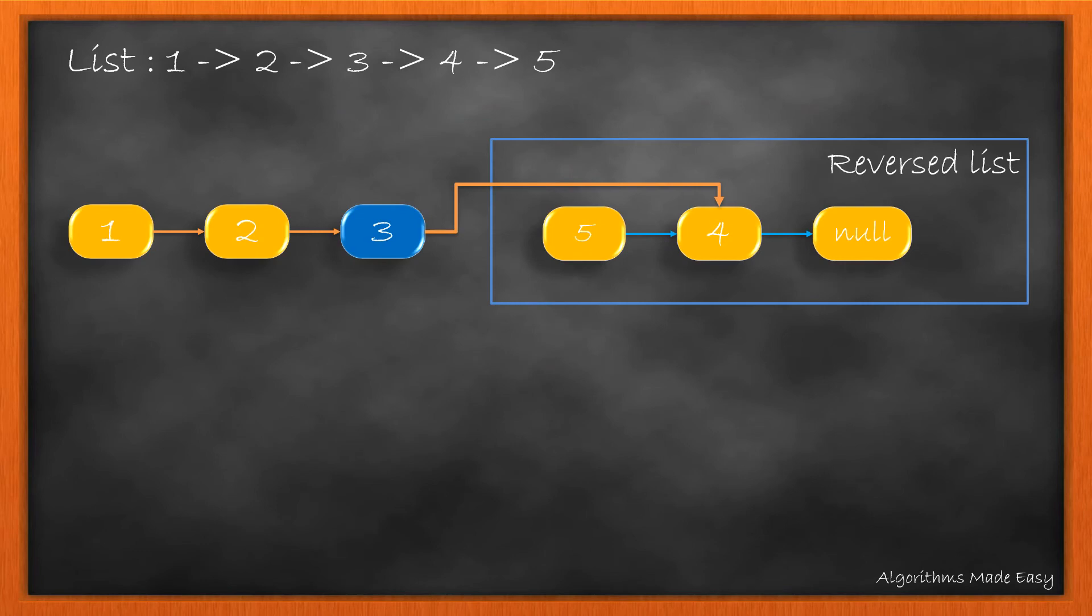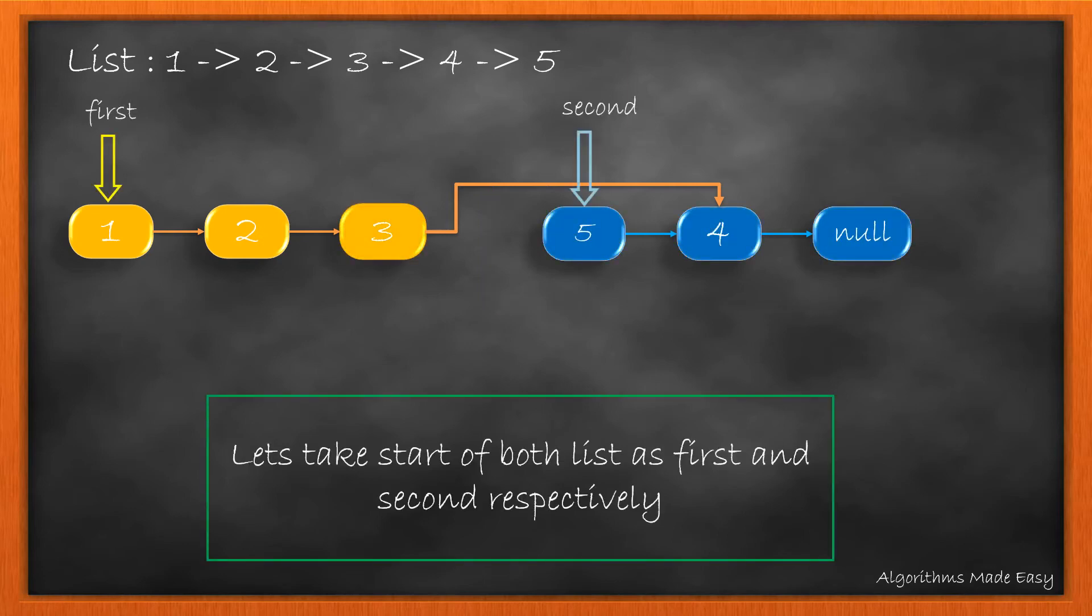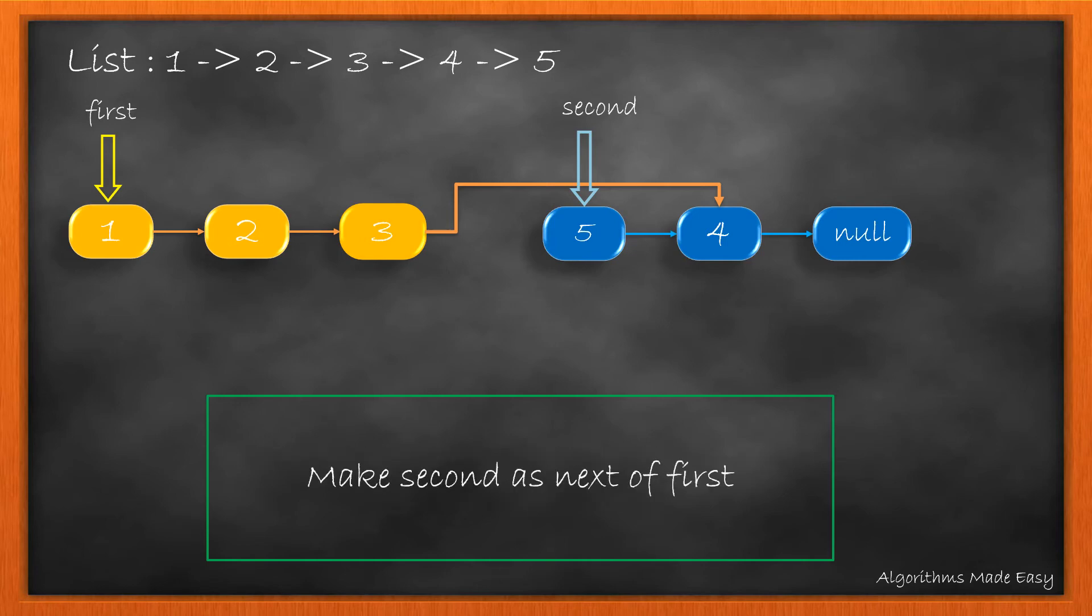We have the head at node 1 and the previous pointer at node 5. So now we need to merge these two lists. Renaming the head as first and previous as second. Now, we need to weave the second list into the first one by making the second node as the next for the first and then the next of second as node 2, that is currently the next to first.